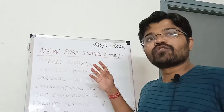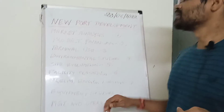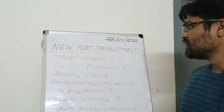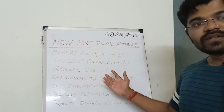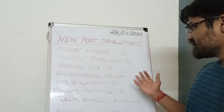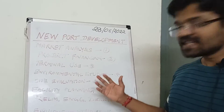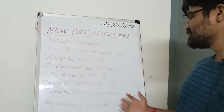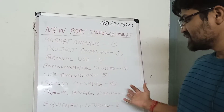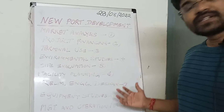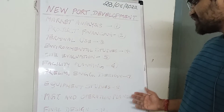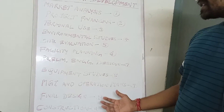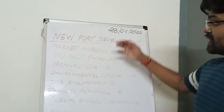We will go through its development phases. There are a total of 11 phases: first is market analysis, second is project financing, third is terminal use, fourth is environmental studies, fifth is site evaluation, sixth is facility planning, seventh is preliminary engineering design, eighth is equipment studies, ninth is management and operation plans, tenth is final design, and eleventh is construction.